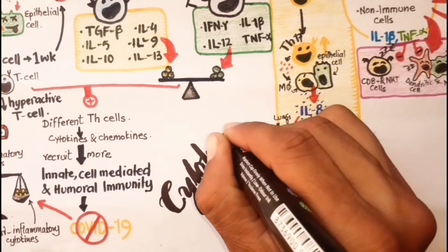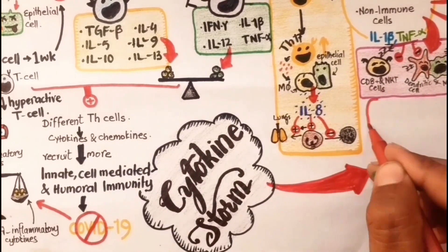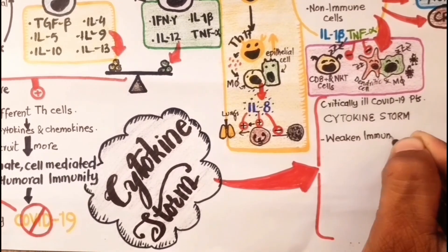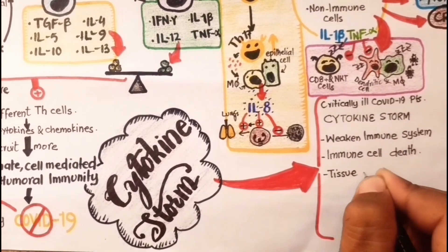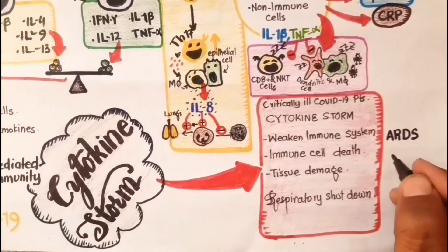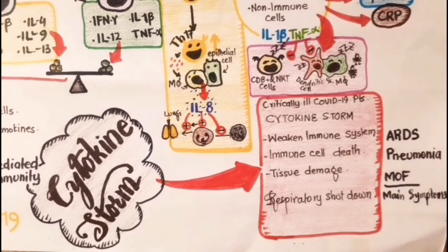Many studies suggest that in critically ill COVID-19 patients, cytokine storm leads to remarkable pathological consequences. The cytokine storm elicits immunological changes that can potentially weaken the immune response needed to clear SARS-CoV-2 infection, and may directly lead to immune cell death, tissue damage, and respiratory shutdown. ARDS, pneumonia, and multi-organ dysfunction are the main clinical consequences of COVID-19 infection. It is largely accepted that ARDS and pneumonia in deadly cases are due to cytokine storm, though whether cytokine storm, direct viral effects, or synergistic effects of both contribute to multiple organ failure remains unclear.